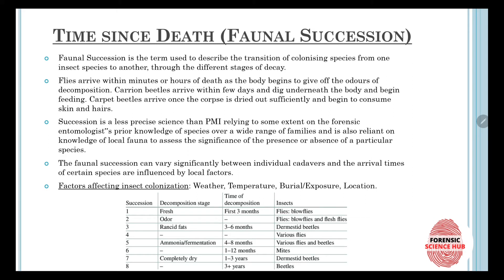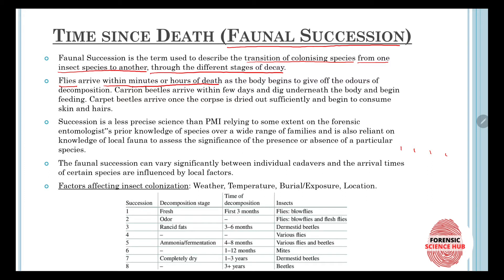Then comes the estimation of time since death, which can be estimated by faunal succession. Faunal succession is the term used to describe the transition of colonizing species from one insect species to another through the different stages of decay. Once the body is dead, different types of insects arrive at certain time periods, so faunal succession helps us determine the time since death.